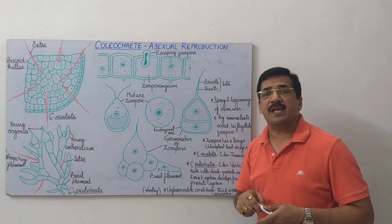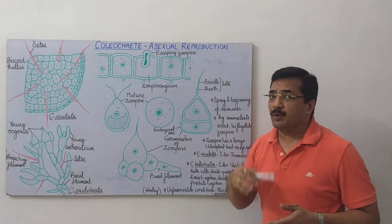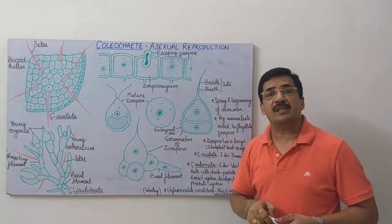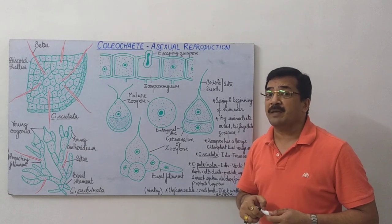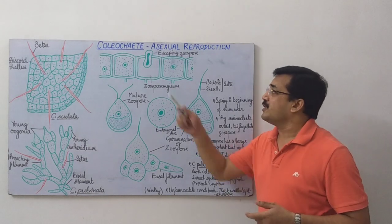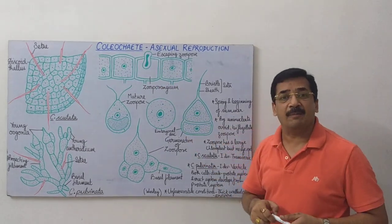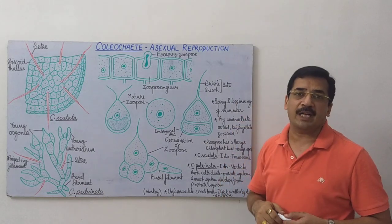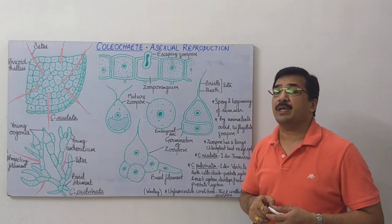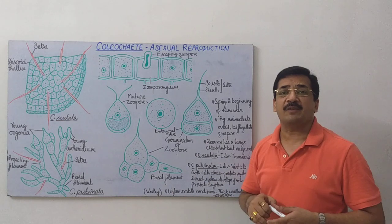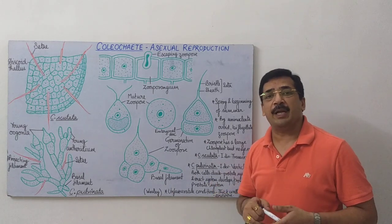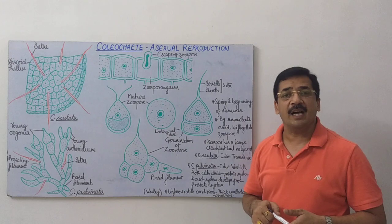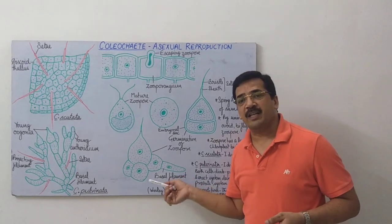Ek scientist hue Wesley, unhone yeh study kiya ki kai baar unfavorable conditions mein, zoosporangium se zoospore banne ke sthan par, ek thick-walled spore develop hota hai, jise hum bolte hain aplanospore. Aur jab conditions favorable hoti hain, toh yeh aplanospore germination ke baad new thallus ka formation kar deta hai.